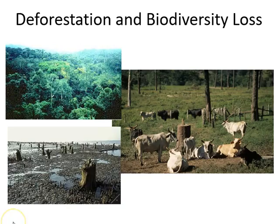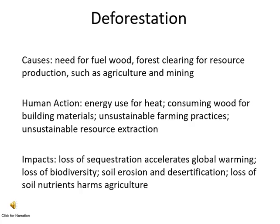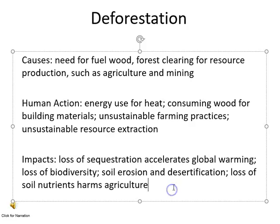A third major problem globally is that of deforestation and biodiversity loss. Deforestation is caused by the gathering of fuel wood, the clearing of forests for agricultural production, but also for mining. Humans are involved in this because they use wood for cooking, heat, and building materials. There are also unsustainable farming practices like slash and burn, and unsustainable resource extraction. The impacts include the loss of sequestration, because forests actually act to cool the atmosphere, which is important in a period of high carbon dioxide concentration and global warming. This can also affect the habitats of different animals and therefore biodiversity. Soil erosion and desertification are also related to deforestation, as is the loss of soil nutrients that can harm agriculture.